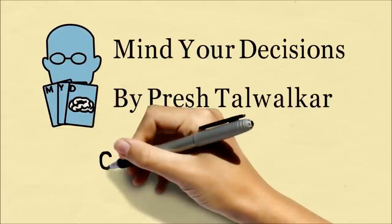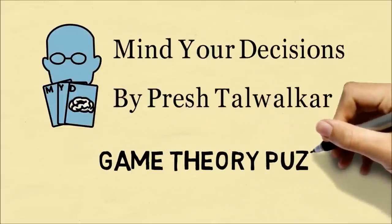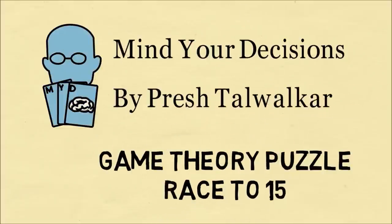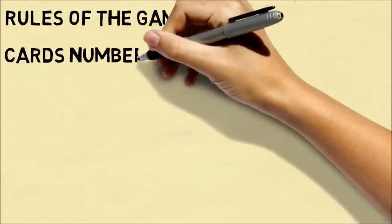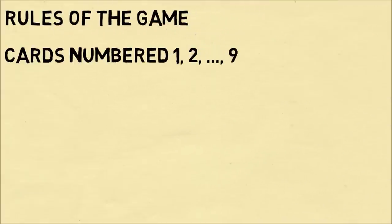Hi, this is Presh Talwalkar. In this video, we're going to discuss a game theory puzzle called the Race to 15. Here are the rules to the game. There are nine cards numbered 1 to 9.